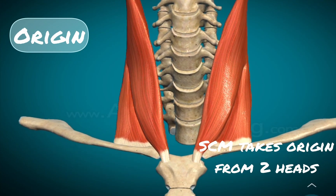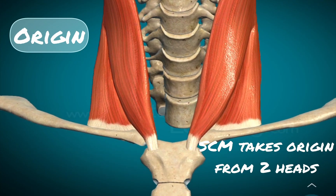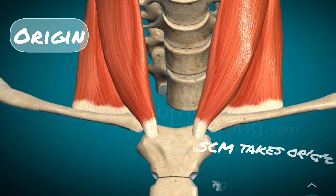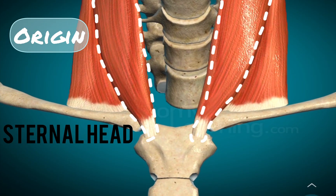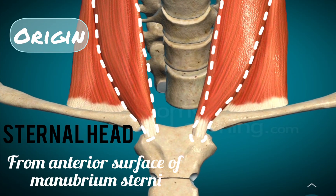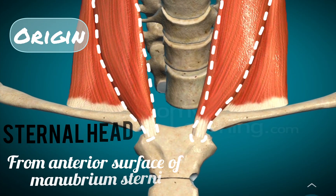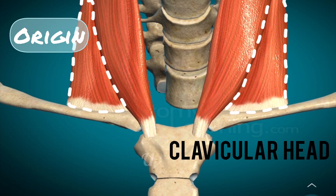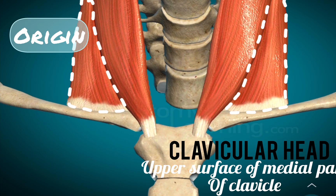The muscle takes origin from two heads. The sternal head, from the anterior surface of the manubrium sterni, and the clavicular head, from the upper surface of the medial part of the clavicle.